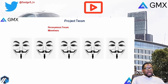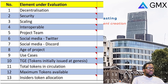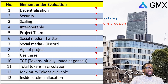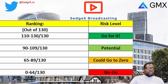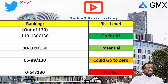As part of our DYOR risk evaluation, we apply our 13 elements and score them from 0 to 10. Once all 13 scores are aggregated, the total is categorized as follows: 0 to 64 out of 130 is 'no-go' - maximum risk. A score of 65 to 89 out of 130 is 'could go to zero' - still a lot of risk. A score of 90 to 119 out of 130 is the 'potential' category. And 110 to 130 out of 130 is the 'go for it' - least risk category. These are the risk categories we'll apply to GMX.